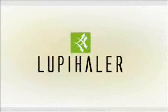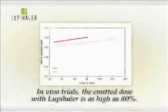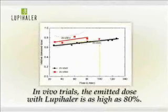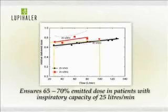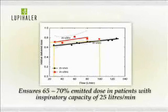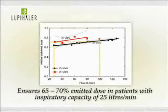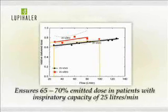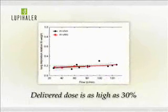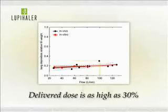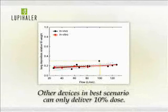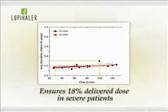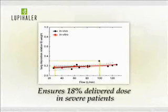Doctor, now you would appreciate the efficacy of Loopyhaler. The in vivo trials show that the emitted dose with Loopyhaler is as high as 80%. For severe patients with inspiratory capacity as low as 25 liters per minute, the currently available devices will not work at all, but Loopyhaler still ensures a 65 to 70% emitted dose. Similarly, if we look at the delivered dose, it is as high as 30%. When any other available device in the best possible scenario can deliver only 10% of the dose, Loopyhaler, even in severe patients, gives up to 18% drug deposition.